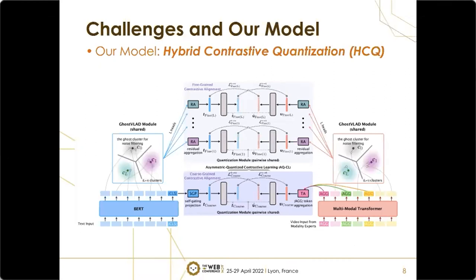Moreover, we design a hybrid contrastive learning strategy that aligns text and video views at coarse-grained and multiple fine-grained levels. At each level, HCQ performs asymmetric quantized contrastive learning across the two views. This strategy serves as strong supervision on the cross-view video quantization model, where contrastive alignments at different levels are mutually promoted.